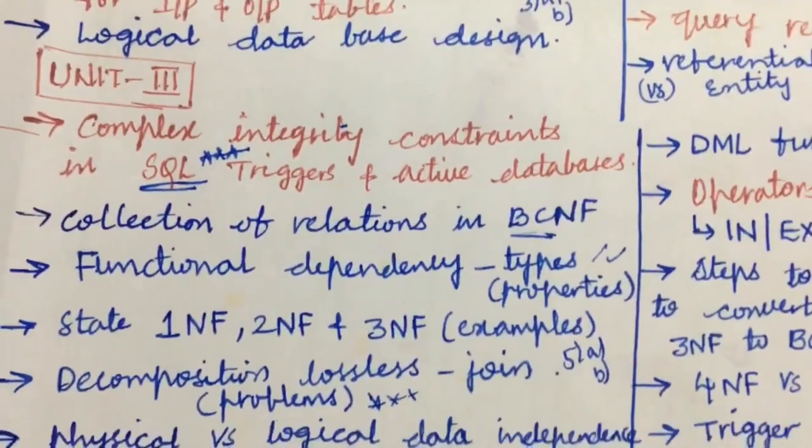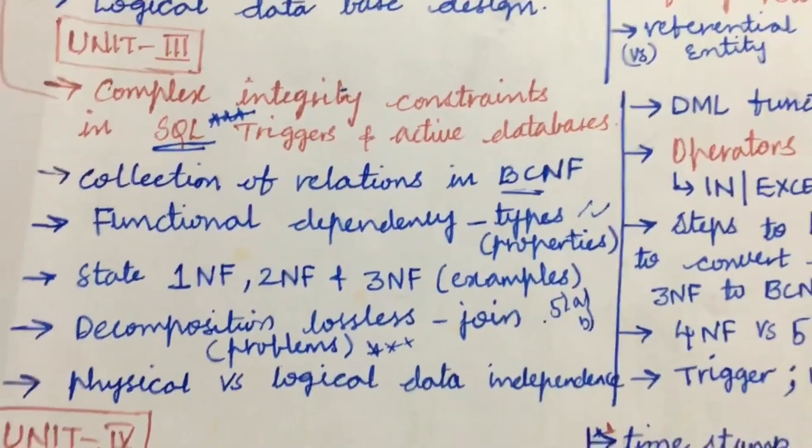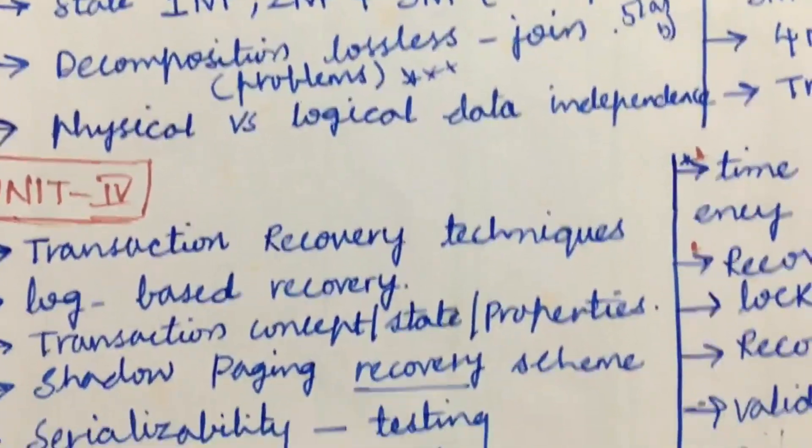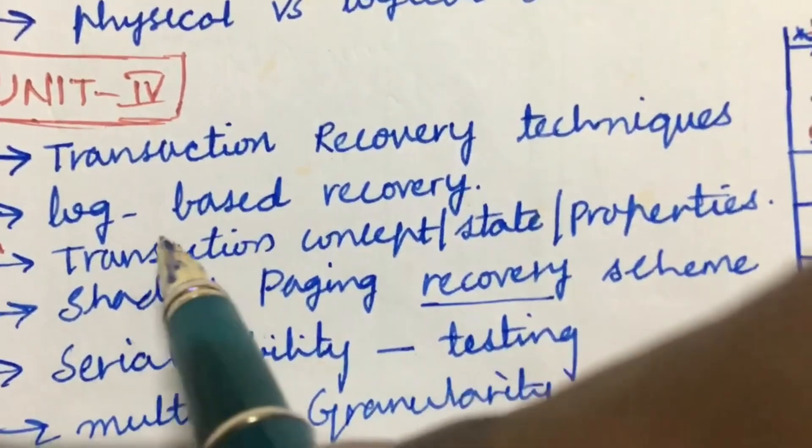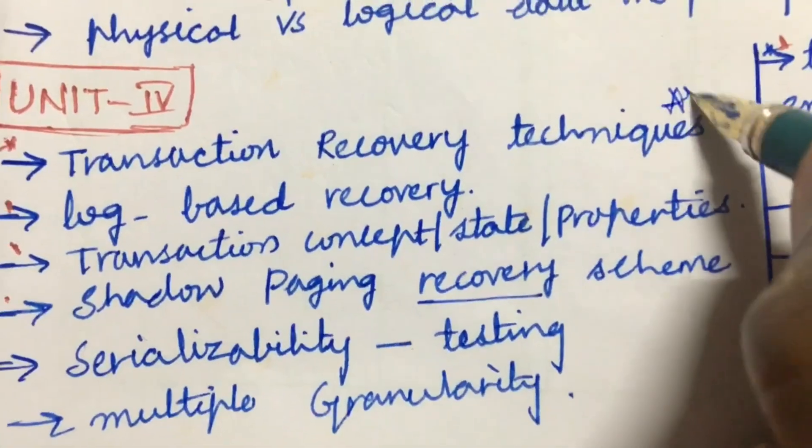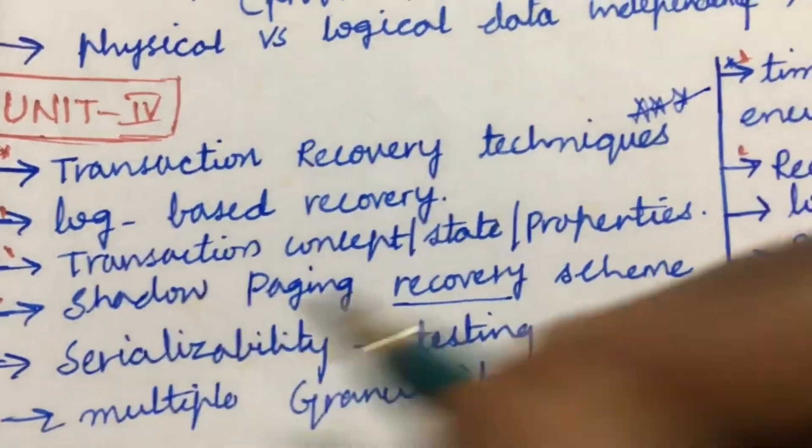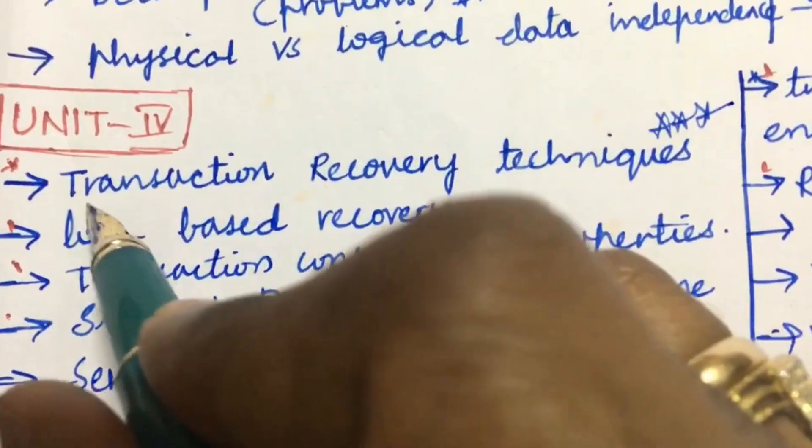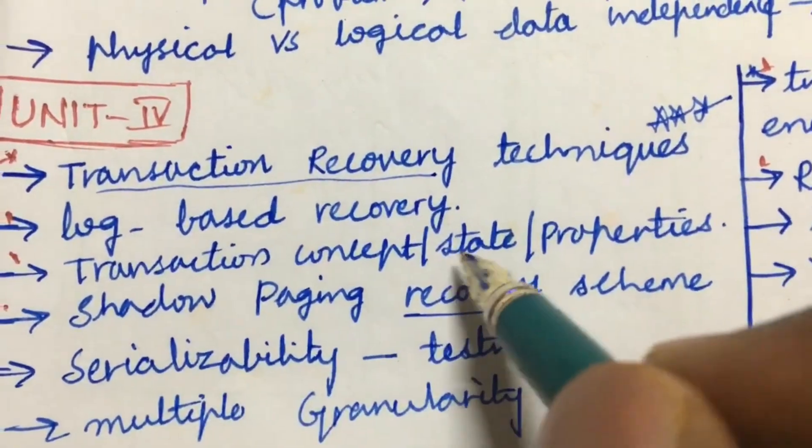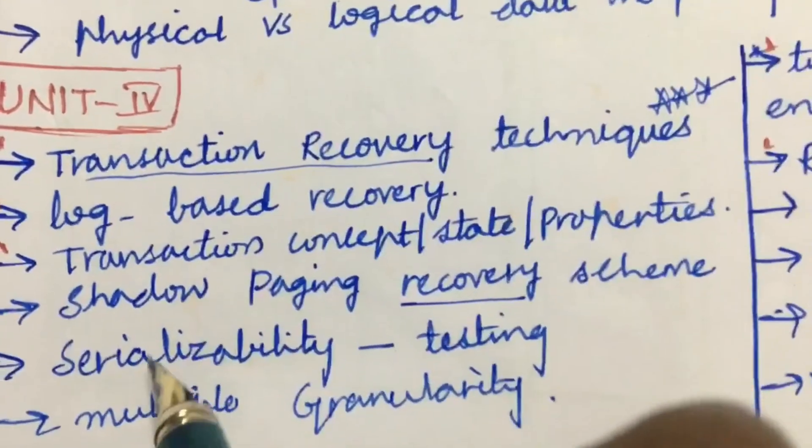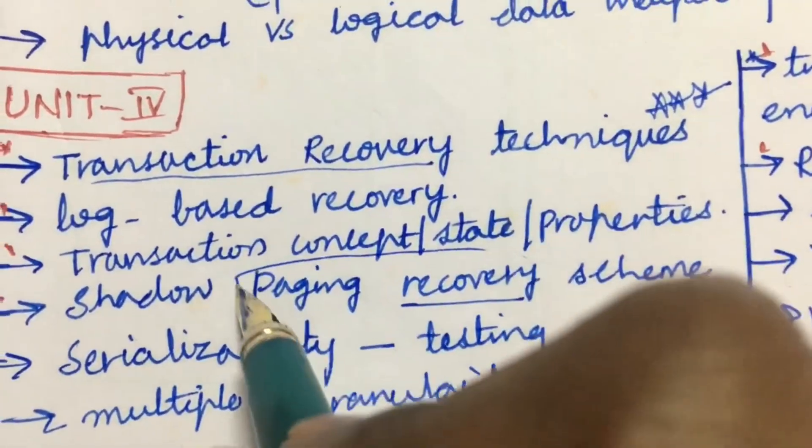From the fourth unit also you are going to get two questions or one and a half questions for this time. Transaction recovery techniques is one of the very important and gunshot question. Log-based recovery, I mean related to transaction recovery, you are going to get one question for sure related to the concept state or properties or shadow paging. Paging recovery is also one of the gunshot questions.